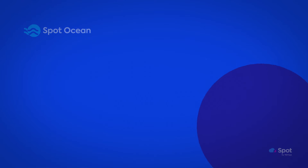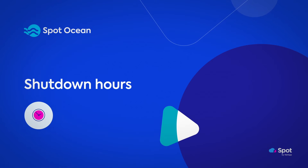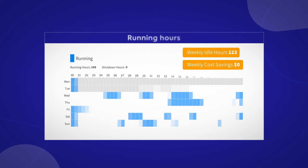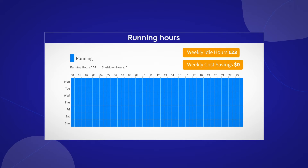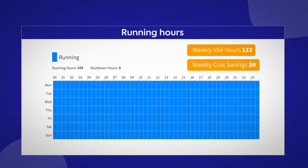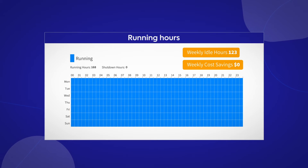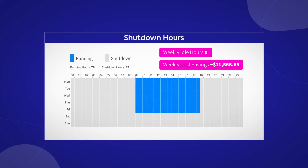You can further reduce idle resources by setting shutdown hours for non-production environments. Many organizations run resources continuously without accounting for periods of low activity, such as nights, weekends, or holidays. Shutdown scheduling ensures that resources are only utilized when truly needed, reducing idle resources outside of business hours. In SpotOcean, you can simply configure the times when the resources should be shut down, so you are not charged for idle resources.